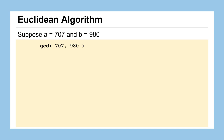Let's see this algorithm in action. Suppose you have two numbers A = 707 and B = 980, and you want to find their greatest common divisor. The Euclidean algorithm says that instead of factoring both numbers and finding common factors, we can simplify by finding the greatest common divisor of 707 and 980 minus 707, the difference between them.